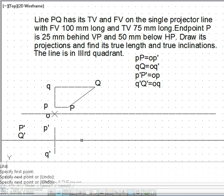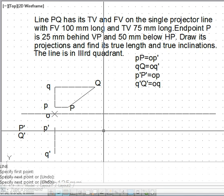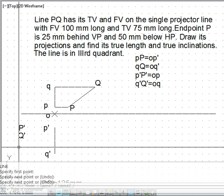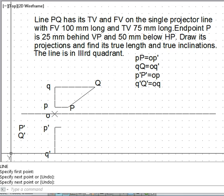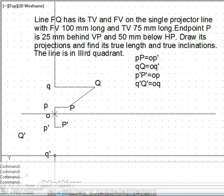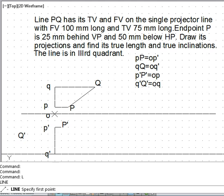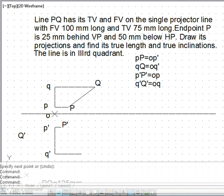Before I demonstrate other things I will complete the problem here. So capital P dash is equal to O P and O P is just 25 mm that gives me point P dash. For getting point capital Q dash we have distance of 100 and so we get point capital Q dash.